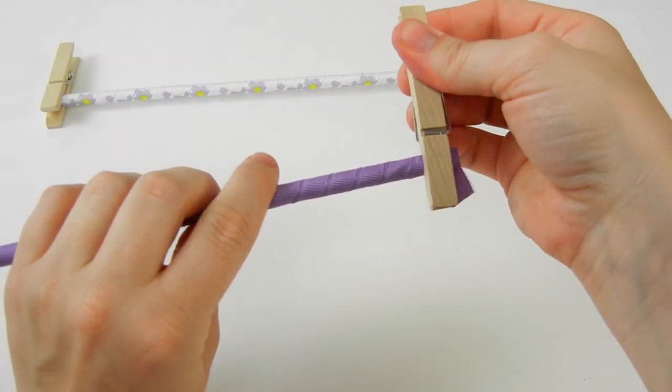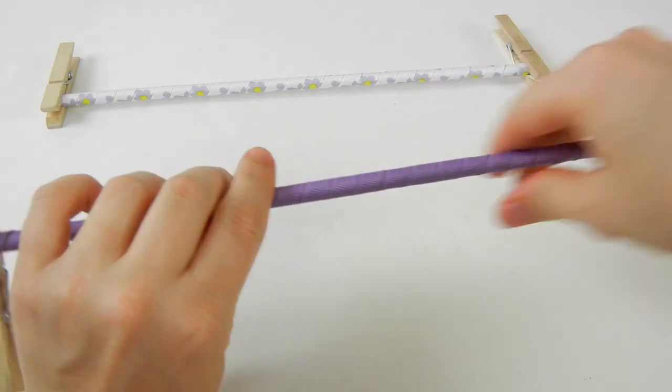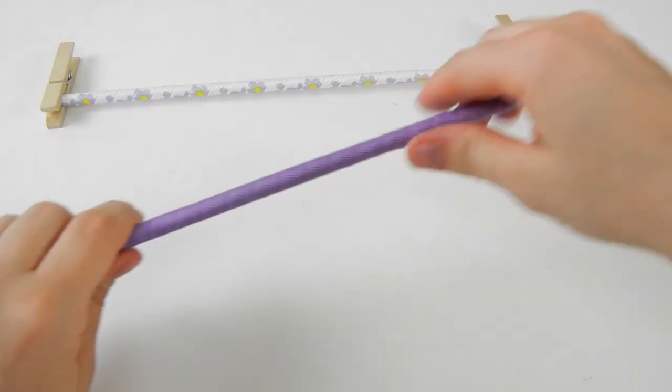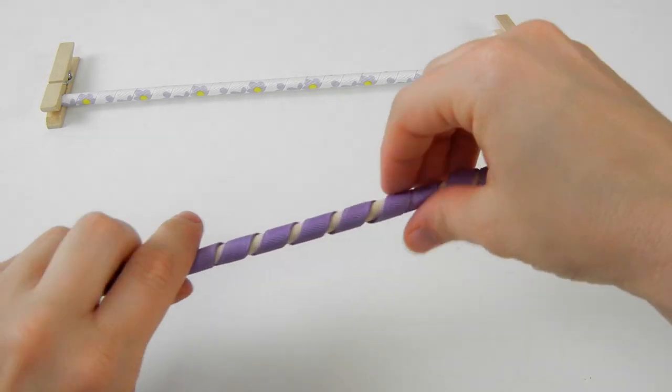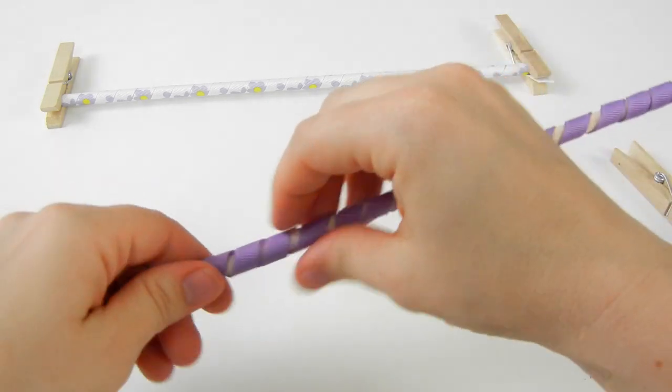Take the clothespins off the ends of your dowel, and then go ahead and start sliding your ribbon off of the dowel.